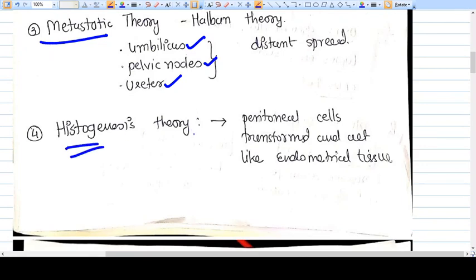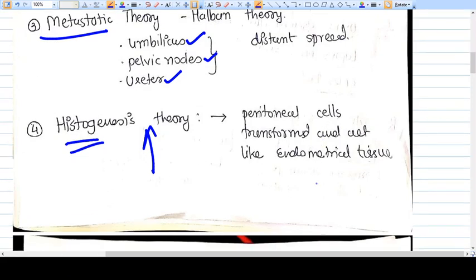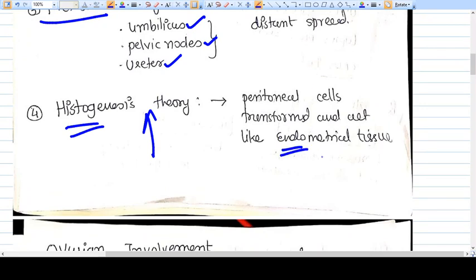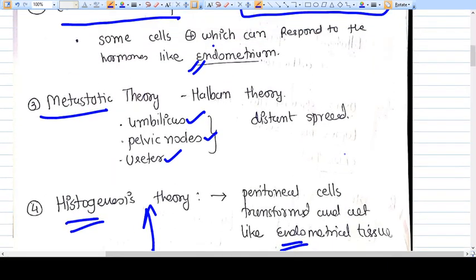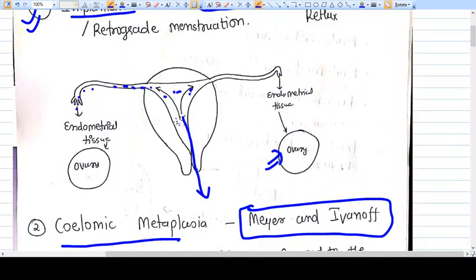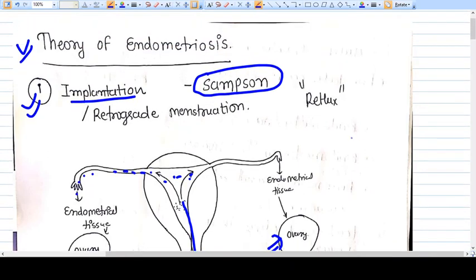The histiogenetic theory explains that some peritoneal cells transform through cell division and conversion. Some peritoneal cells are converted into cells just like endometrium, and they grow and function like endometrium. These are the four different theories of endometriosis, and the most important and accepted theory is Sampson's theory.